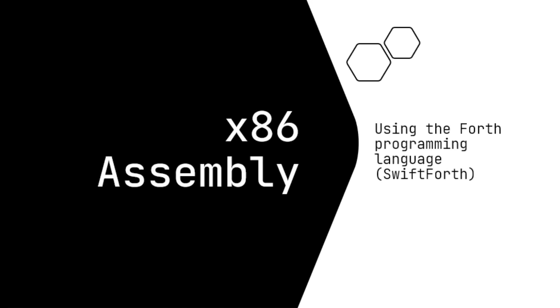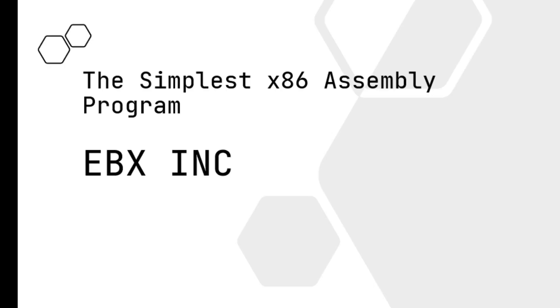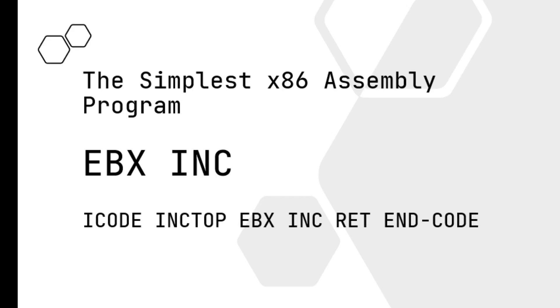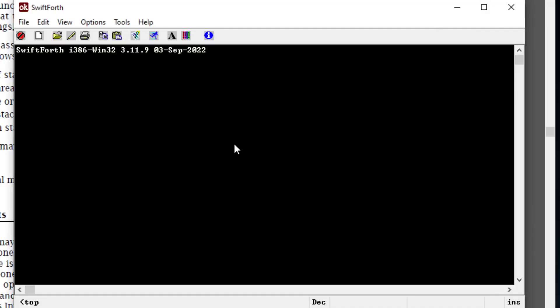Today I'll be showing you how to use x86 instructions in the Forth programming language. I'll be using SwiftForth and we're going to write the simplest x86 program I could think of, which is ebx-increment. All it does is add one to the top of the stack. What you see to the left and right of the red box I'll cover later, but the heart of the program is ebx-increment.